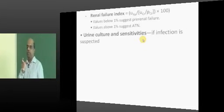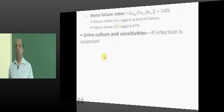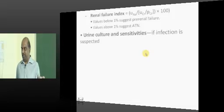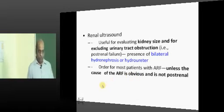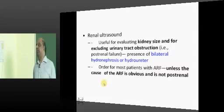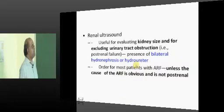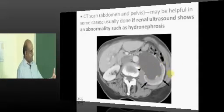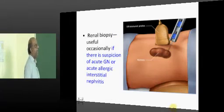A very important parameter evaluated in renal failure is the renal failure index: urinary sodium divided by urinary creatinine over plasma creatinine, multiplied by 100 — the fractional excretion of sodium. Always get a urinary culture done to identify any infectious etiology for the ARF. On renal ultrasound, look for hydronephrosis and hydroureter. On CT scan, you can see significant hydronephrosis giving a clue of post-renal obstructive pathology in ARF.